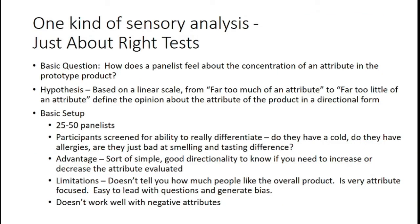Just about right tests: the basic question is getting a sense of how individuals like the concentration of different attributes. It's a linear scale going from 'way too much' of an attribute, through 'just about right' in the center, to 'far too little.' That center tendency is important — we want data to cluster towards the center. It's usually a five or seven point scale.